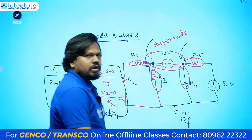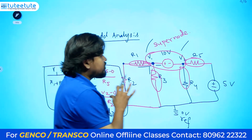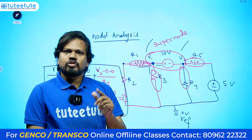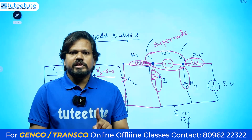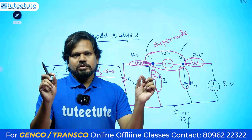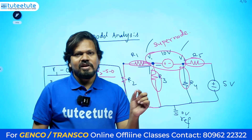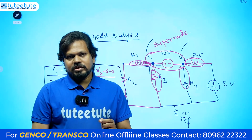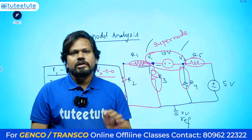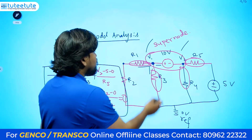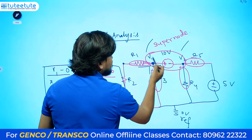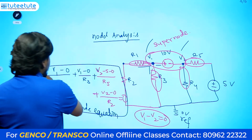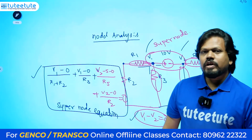So when do we identify a super node? Whenever a single voltage source is present between two principal nodes, we cannot write individual node equations — instead, we write a combined super node equation. For the solution, we also get a second equation from the voltage source itself: since this terminal is positive and this is negative, V1 minus V2 equals 10 volts. From these two equations, we can solve for V1 and V2.